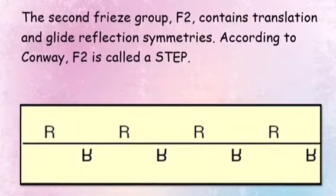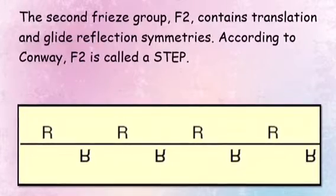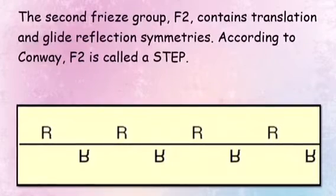The second freeze group, F2, contains translation and glide reflection symmetries. According to Conway, F2 is called a step.